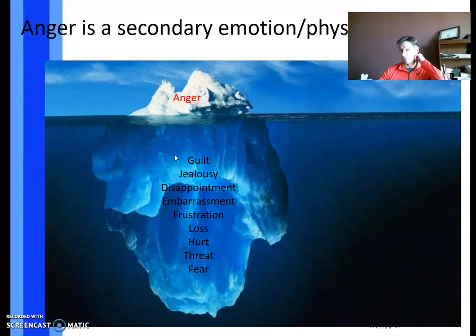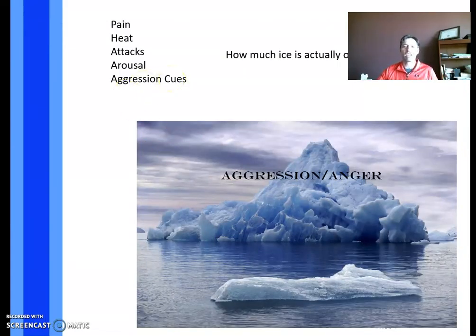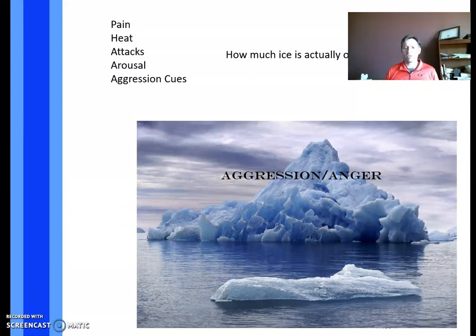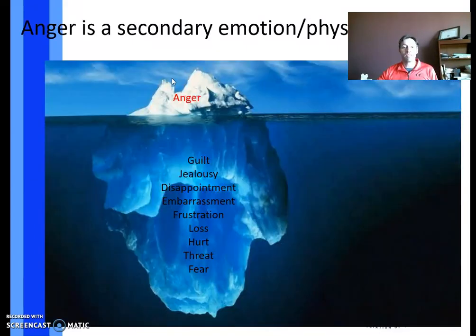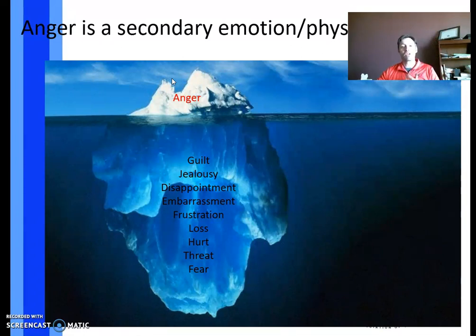Anger is a secondary emotion. People are typically feeling guilt, a loss of control, hurt, fear, abandonment, or frustration underneath. Anger is not a true emotion — it's a physiological response. When you get angry, fists tense, brow furls, teeth clench, stomach gets butterflies, heart beats faster, breathing becomes rapid. Your amygdala kicks in and sends adrenaline through your system. If you want to mitigate anger, address those primary feelings.